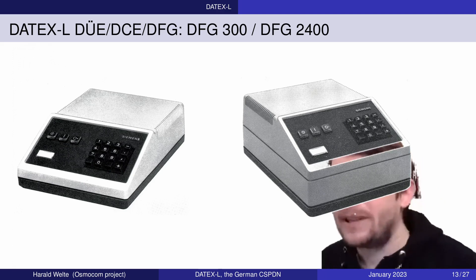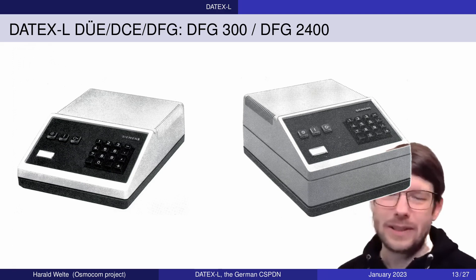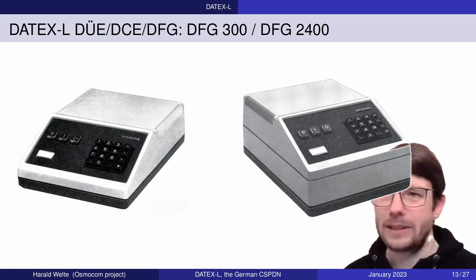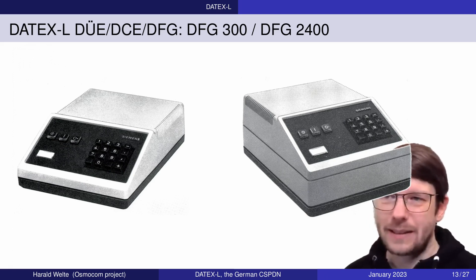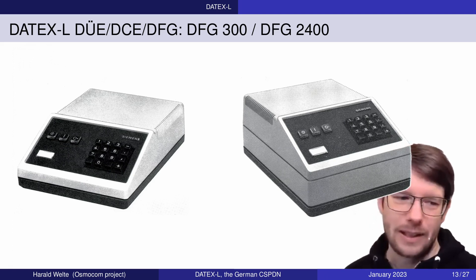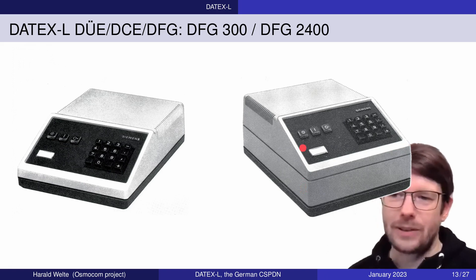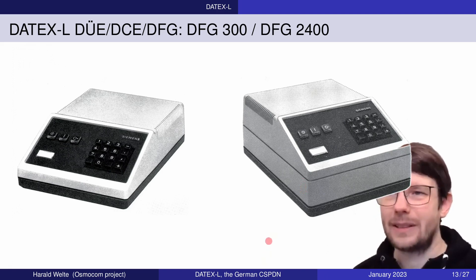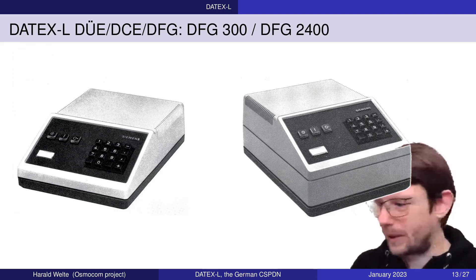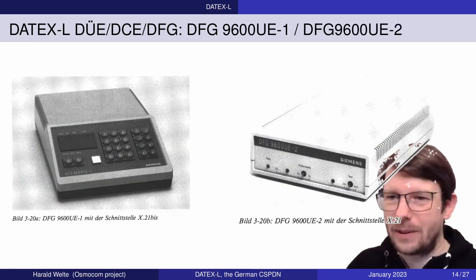When the X.21 interface was introduced with synchronous communication, the X.21 interface had facilities for dial information and signaling to happen at the terminal. So the terminal could tell the DFG which destination subscriber to dial. Since it was a completely different network, it also had a completely different numbering plan — numbers in DATEX-L are completely different from the telephony network's number ranges and prefixes, with no interfacing between those networks. Similarly, the telex network also had its own completely separate numbering plan.